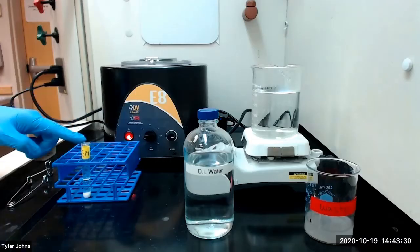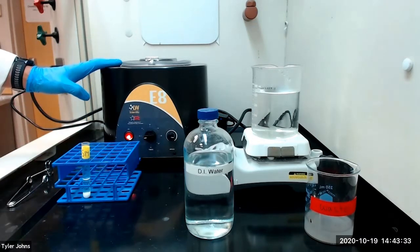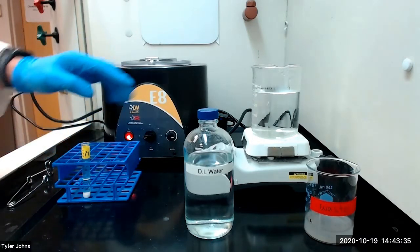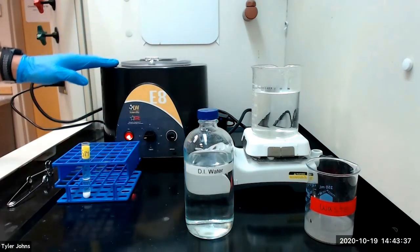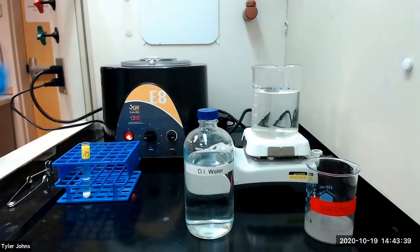After 10 minutes, we will centrifuge our mixture and discard the liquid. We will then wash our precipitate with deionized water, centrifuge again, and discard the wash liquid.